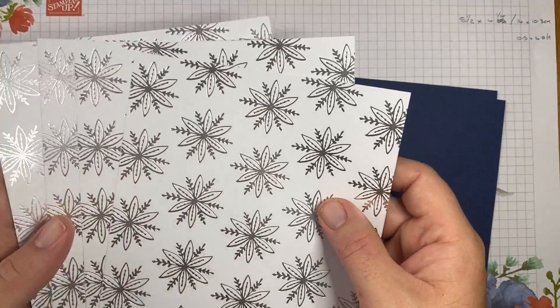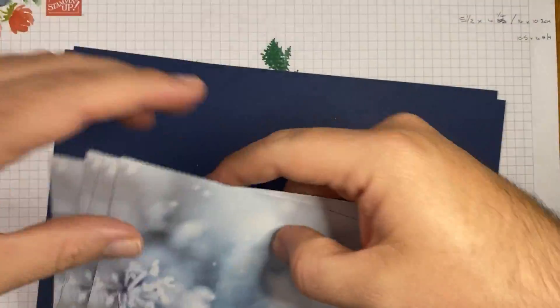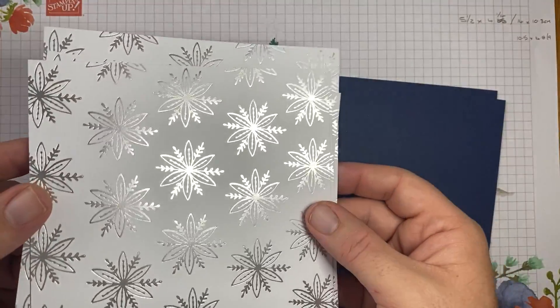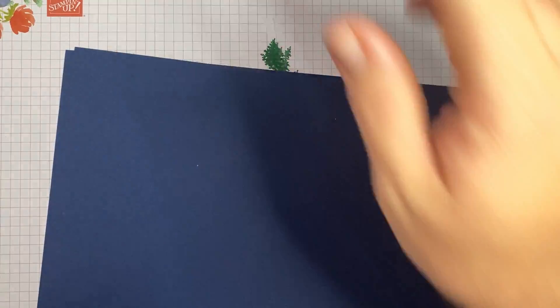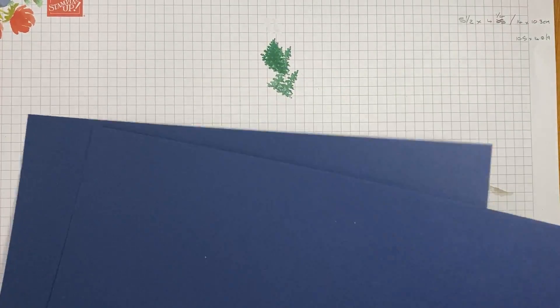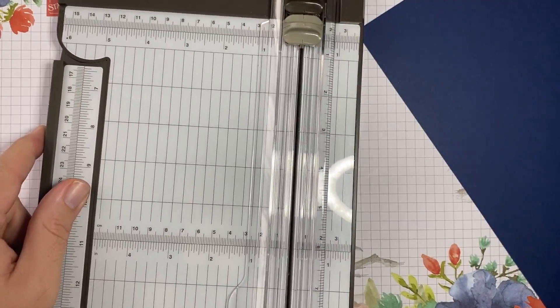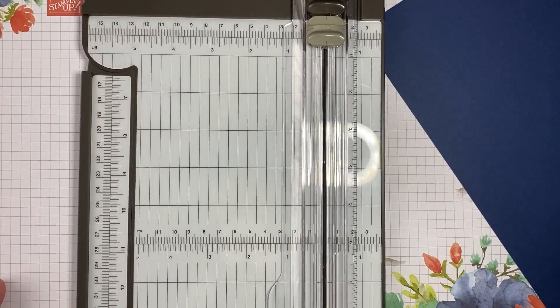I'm also going to be using the Feels Like Frost Designer series paper. So I have got some Knight of Navy cardstock. I'm going to bring in my trimmer here, my trusty trimmer. This is the new Stampin' Up trimmer if you haven't seen it yet.